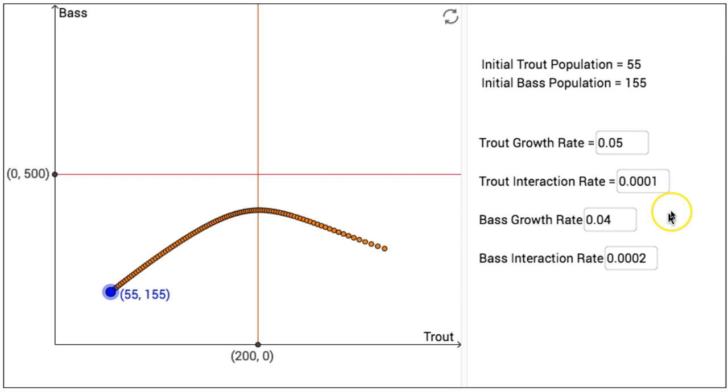So the initial trout interaction rate is set at 0.0001, or 1 one-hundredth of a percent, and the bass interaction rate is set at 0.0002, or 2 one-hundredths of a percent.